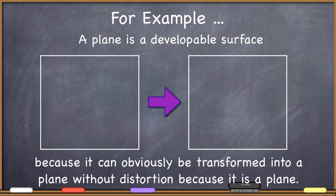A sphere is not a developable surface. If a sphere could be directly converted into a plane in this way, then we would be set — we wouldn't have to worry about projections. But it can't, so we have to use one of these developable surfaces.